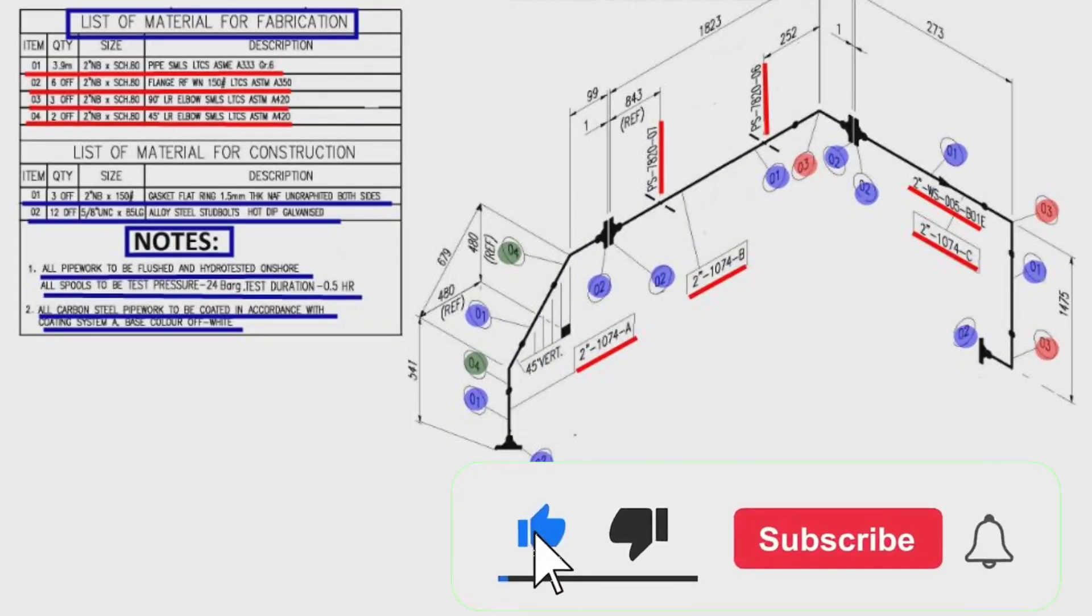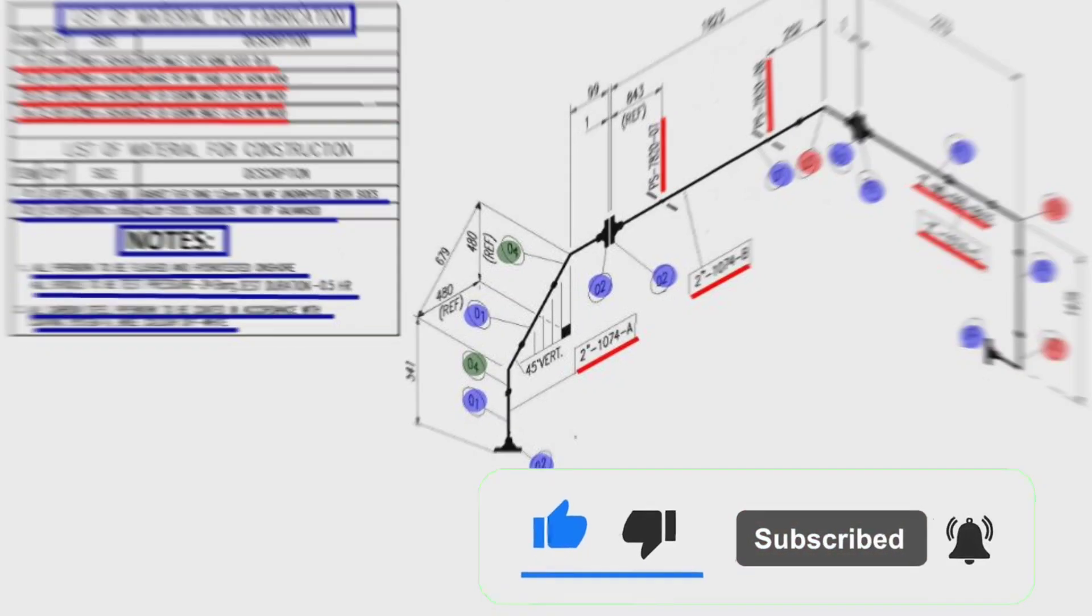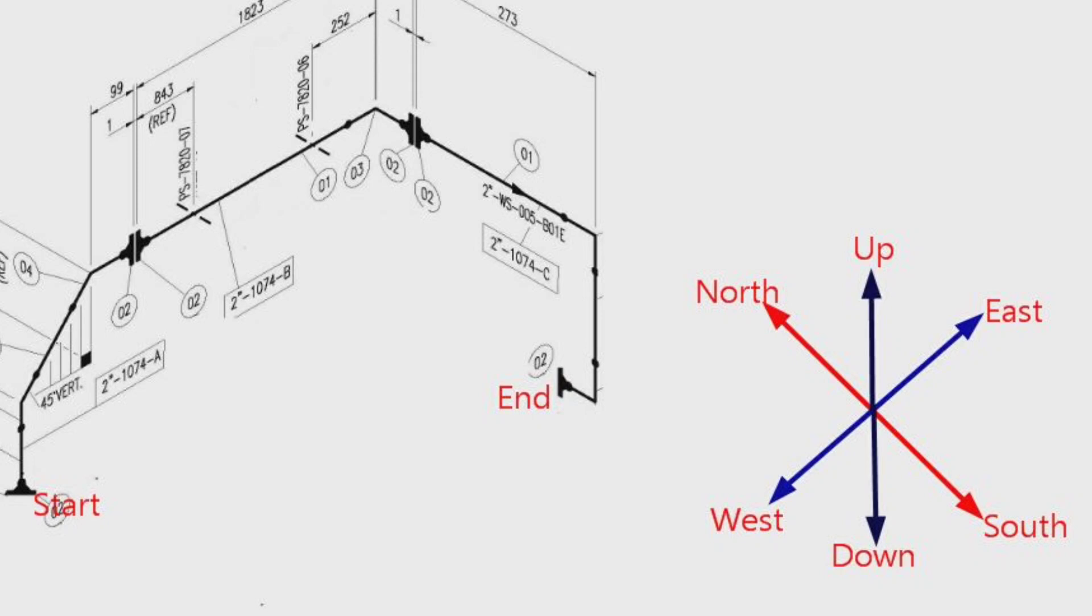Now let's learn an easy way to read the isometrics of this pipeline oriented in different directions. This scheme you see in the video shows the directions. Let's try to read this pipe drawing with the help of this scheme. There are 6 directions here.